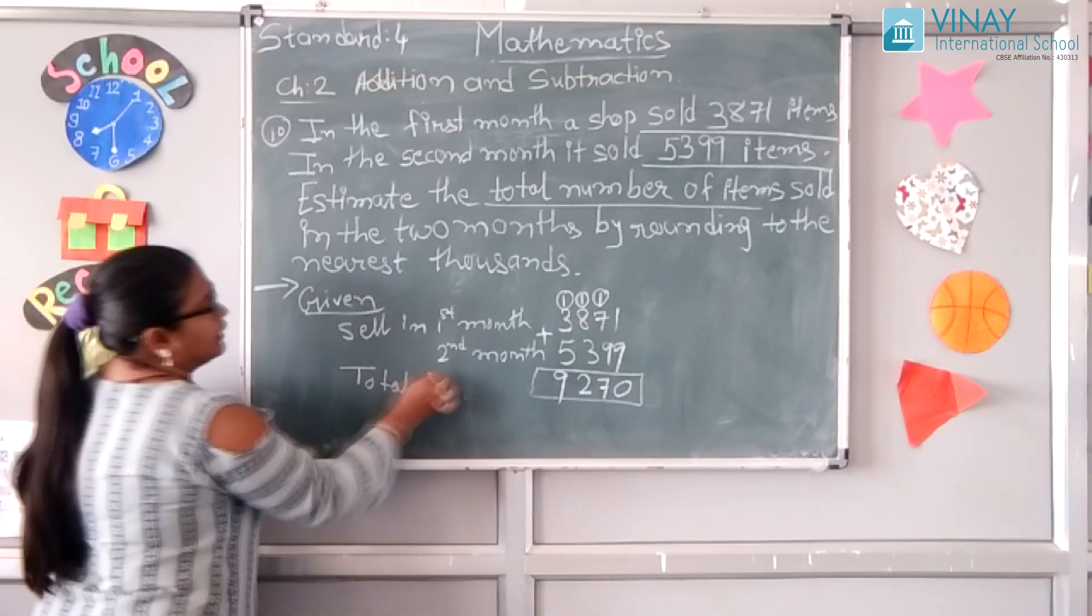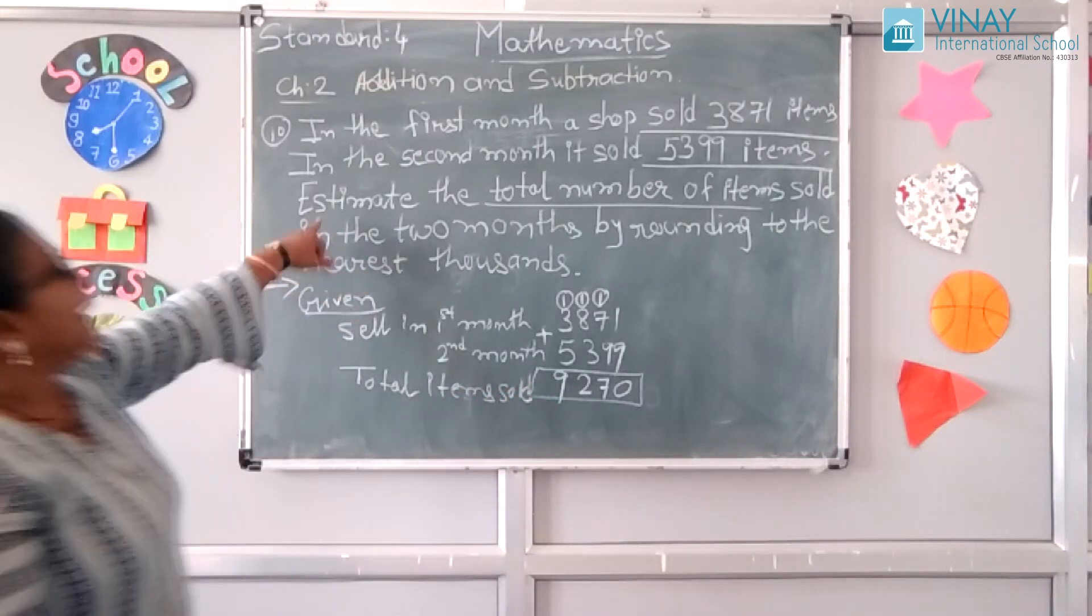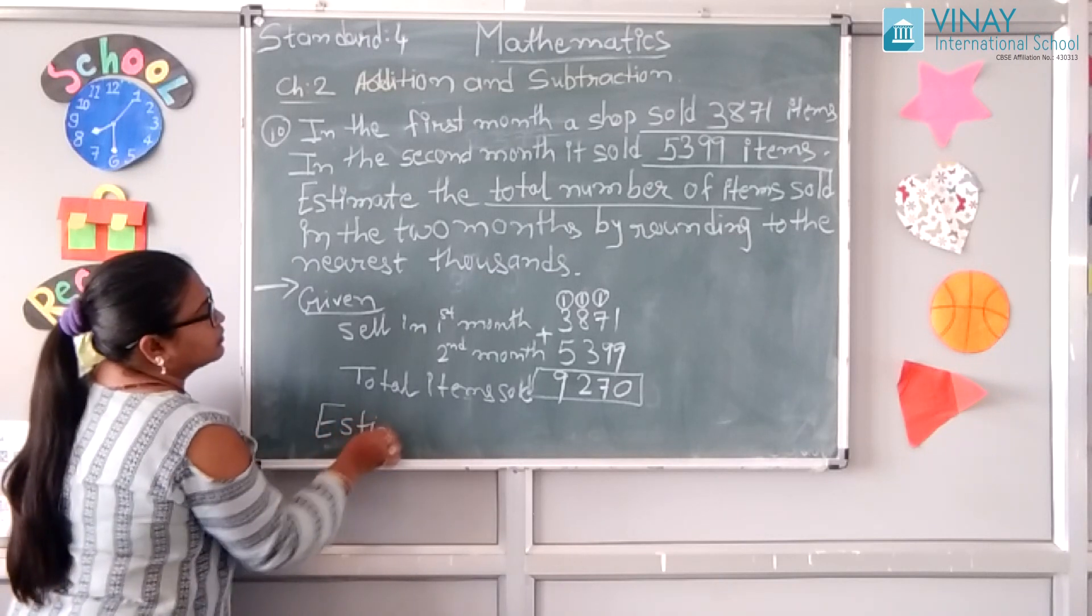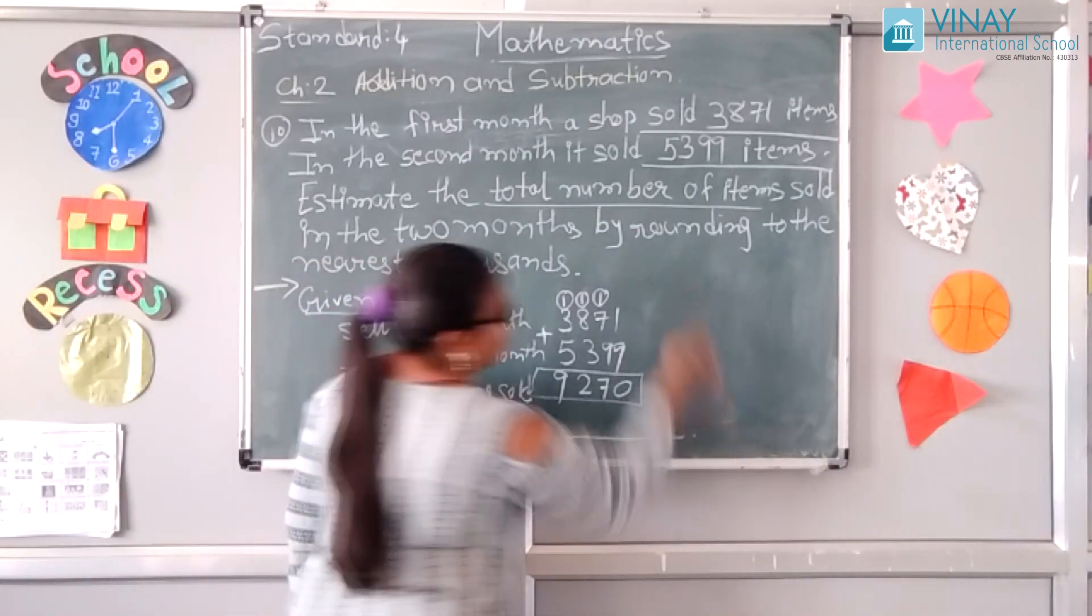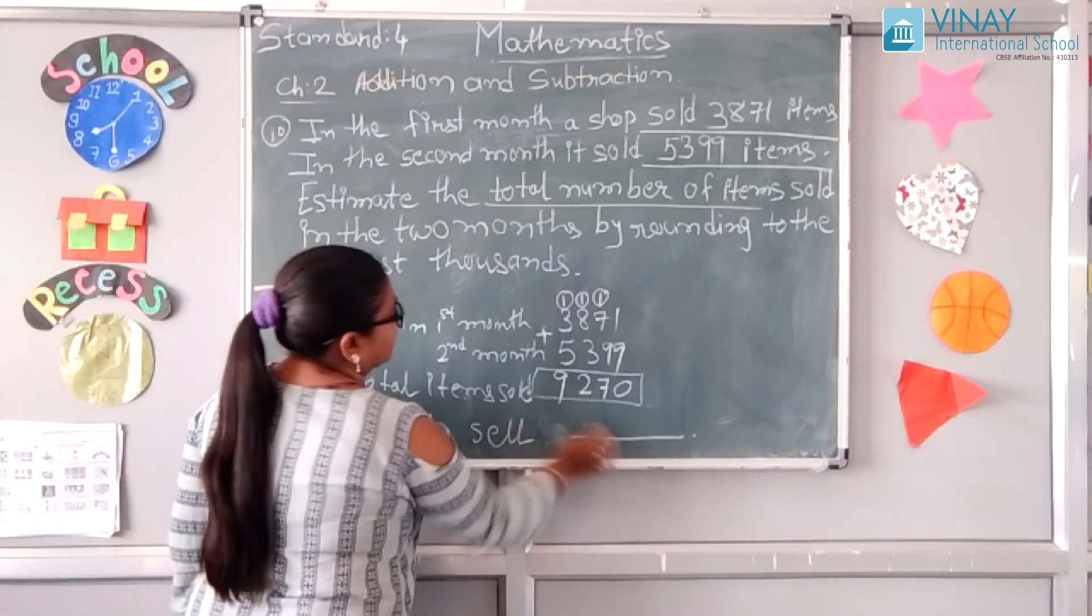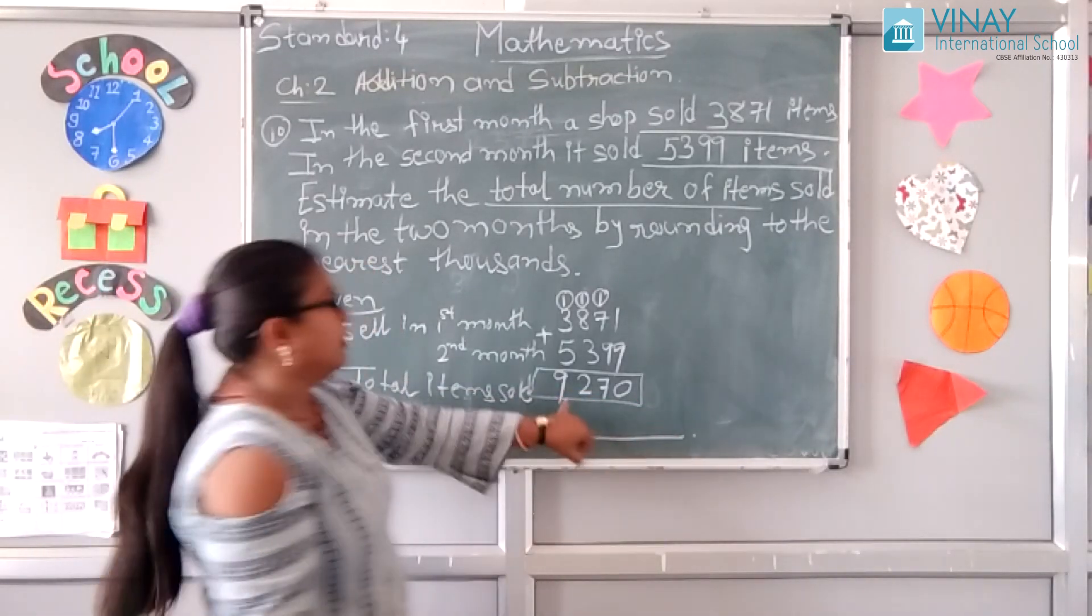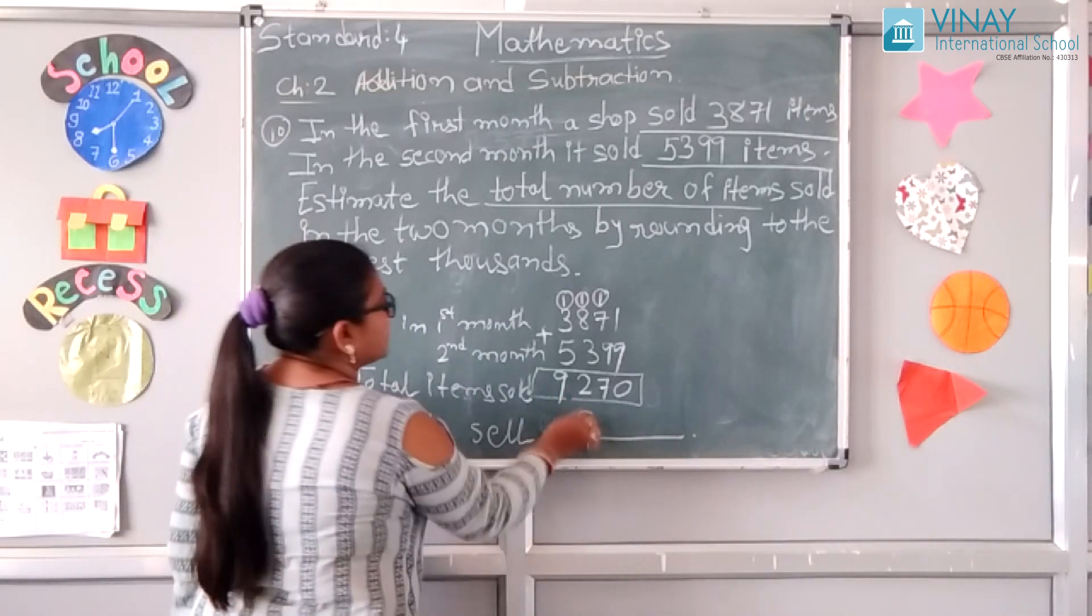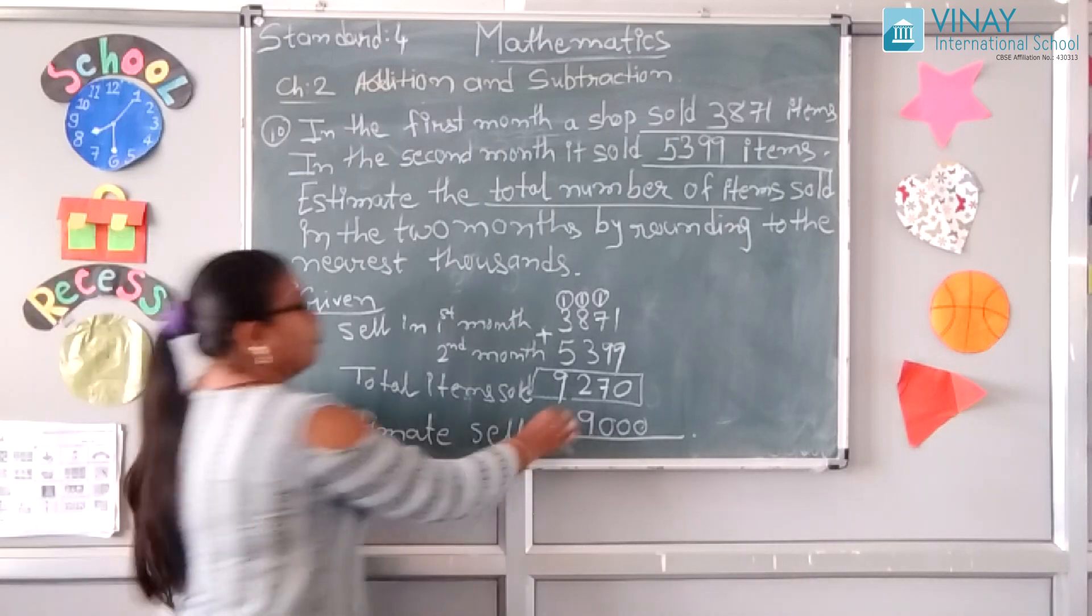This is the total items sold. Now estimate by rounding to the thousand. Estimate is equal to... thousand is equal to... So we can write estimate sold of items to the 9000 items. Now we got our answer.